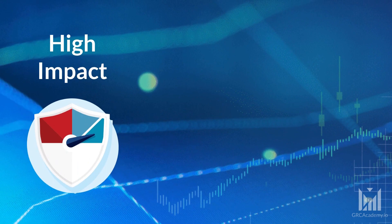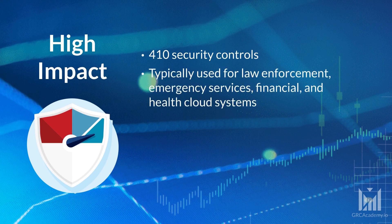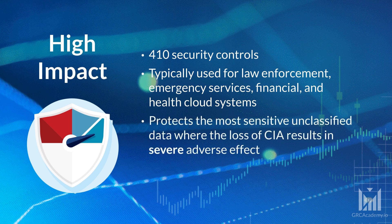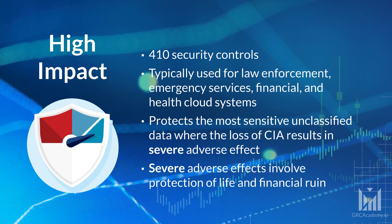The high-impact baseline has 410 security controls. It's typically used for cloud systems supporting law enforcement, emergency services, or financial and health. FedRAMP states that the high baseline was created to protect the government's most sensitive, unclassified data in cloud computing environments where the loss of confidentiality, integrity, and availability would have severe adverse effects to an agency's operations, assets, or individuals. Serious adverse effects involve protection of life and financial ruin.